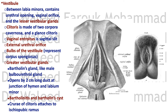The vestibule, the area between the labia minora, contains the urethral opening, the vaginal orifice, and the lesser vestibular glands. The clitoris is made of two corpora cavernosa only — there is no corpus spongiosum in the clitoris — and a glans clitoris, which is an expansion of the distal end.